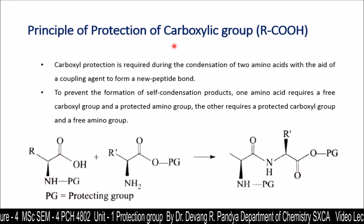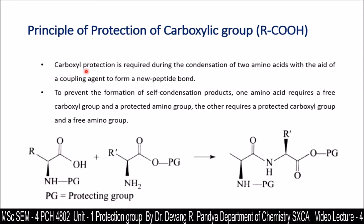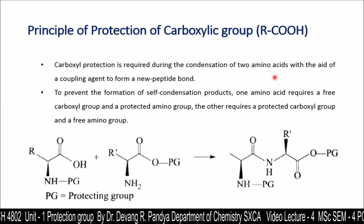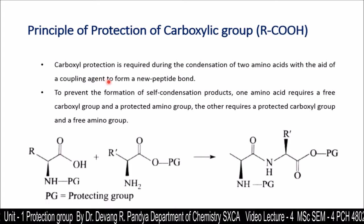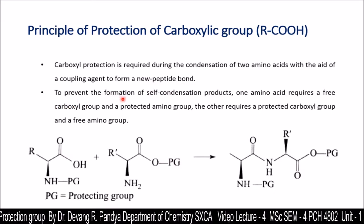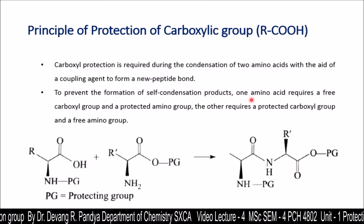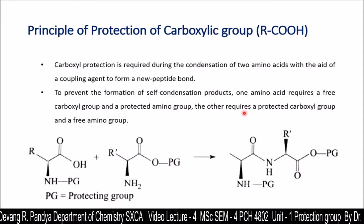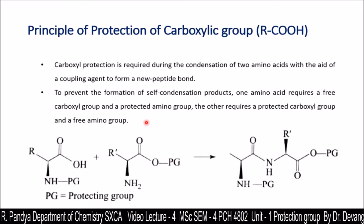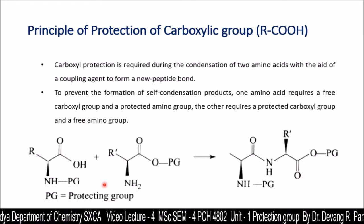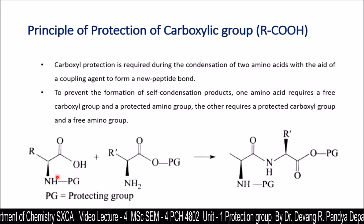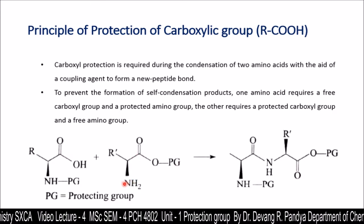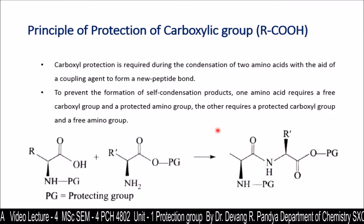Furthermore, in the principle of the protection of carboxylate group, carboxyl protection is required during the condensation of two amino acids — with the aid of a coupling agent — to form a new peptide bond. To prevent the formation of self-condensation products, one amino acid requires a free carboxylic group and a protected amino group; the other requires a protected carboxylic group and a free amino group. Here you can see the amino group is protected with a free carboxylic group, and there the carboxylic group is protected with a free amino group, giving the peptide linkage.